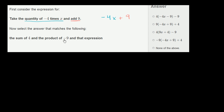Now select the answer that matches the following: the sum of 4 and the product of negative 9 and that expression. So we're going to take 4 and add it to the product of negative 9 times that expression. So we're going to multiply negative 9 times negative 4x plus 9, giving us 4 plus negative 9 times the quantity negative 4x plus 9.